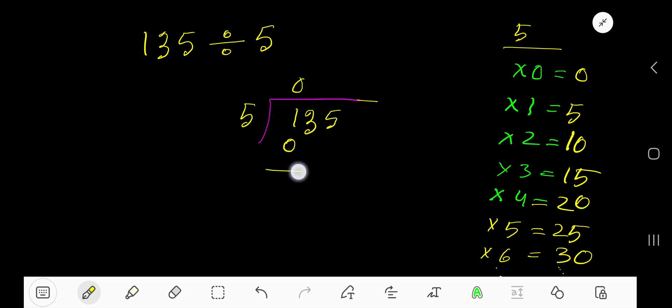Bring down the 3. 5 goes into 13 how many times? 3 times 15 is greater, so we stop there. 2 times. 2 times 5 is 10. If you subtract, you get 3.